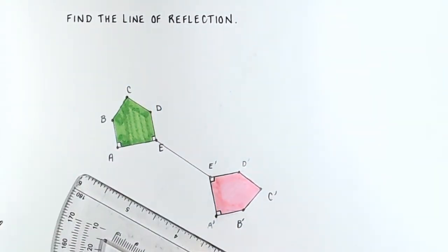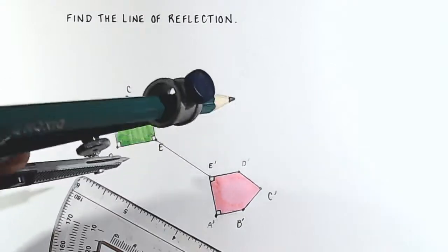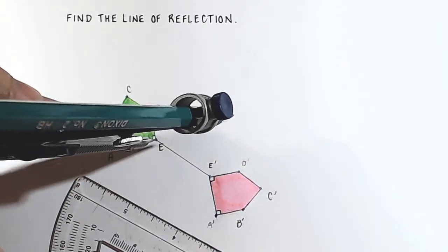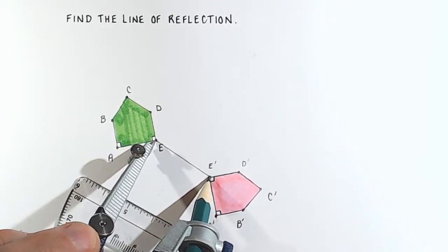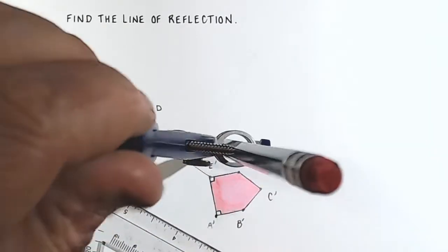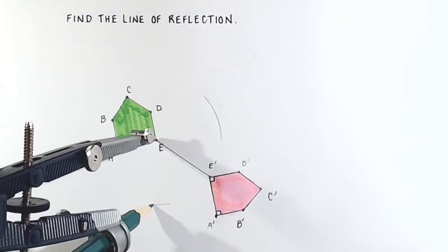All we have to do is construct a perpendicular bisector in order to find the line of reflection. So first, I'll set the compass distance from E to E prime. And what I'm going to do is rotate an arc here and an arc down here.